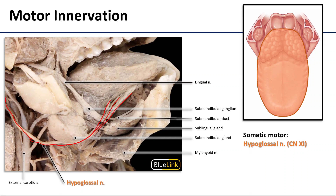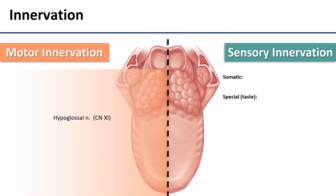The sensory information from the tongue is carried by different nerves than the motor innervation. Not only that, but there are two types of sensory innervation: somatic touch sensory and special taste sensory, and they differ for the anterior and posterior regions of the tongue. For innervation purposes, the posterior part of the tongue refers to the root of the tongue plus the vallate papillae — those very big papillae — and the body will be everything anterior to that.